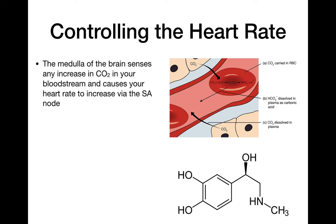One way heart rate changes is if the brain senses an increase in carbon dioxide levels. The medulla is one part of the brain, and it's going to detect this information. If it knows your CO2 is high in your bloodstream, it will cause your heart rate to increase — it'll send a signal to the SA node to increase heart rate. Carbon dioxide comes from muscle use and cellular respiration, and you need to get CO2 out and bring oxygen in through ventilation across the lungs and capillaries. So if blood isn't flowing over the lungs fast enough, you can't deliver that exchange — the heart rate determines how quickly you can do that.